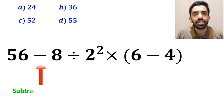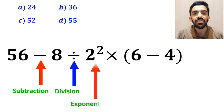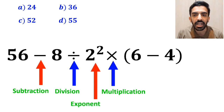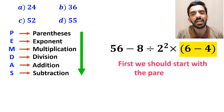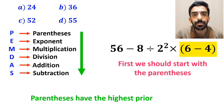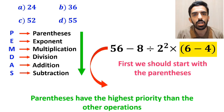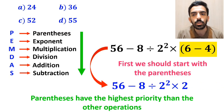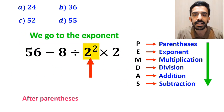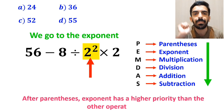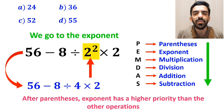Alright, as you can see in the image, in this expression, first we have a subtraction sign, then a division sign, after that we have an exponent, then a multiplication, and finally parenthesis. According to PEMDAS, first we should start with the parenthesis, because parenthesis have the highest priority. So we can write this expression as 56 minus 8 divided by 2 squared, then times 2. In the next step, we go to the exponent, because after parenthesis, exponent has a higher priority. So this expression simplifies to 56 minus 8 divided by 4, then times 2.